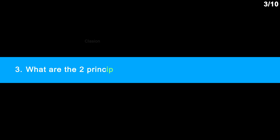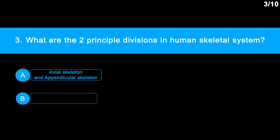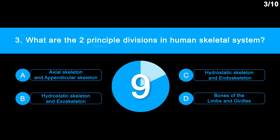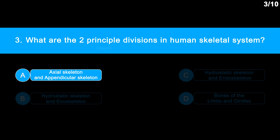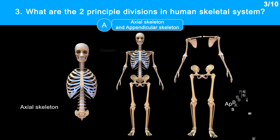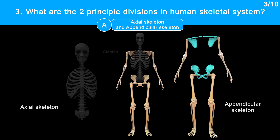Question 3: What are the two principal divisions in the human skeletal system? Option A, axial skeleton and appendicular skeleton. Option B, hydrostatic skeleton and exoskeleton. Option C, hydrostatic skeleton and endoskeleton. Option D, bones of the limbs and girdles. The correct answer is option A, axial skeleton and appendicular skeleton. The human skeletal system can be divided into two main parts: the axial and the appendicular skeletons. The axial skeleton forms the central axis of the body, and the appendicular skeleton includes girdles and limbs.